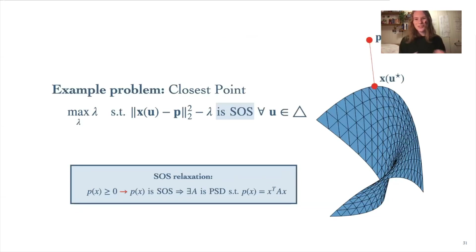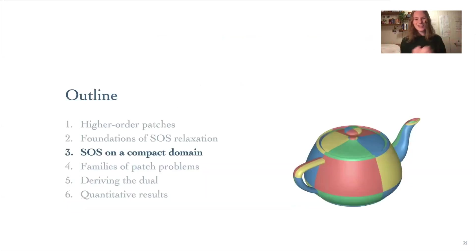So how would we apply this to a real problem? Well, we simply change the constraint that the polynomial is greater than or equal to zero into the constraint that it is SOS. Notice that this is relaxation because not every positive polynomial is necessarily an SOS polynomial. You might also notice that this particular problem, the closest point problem, and in fact all of our patch problems, is defined on a compact domain, whereas we talked about SOS relaxation on polynomial over all space in this section. So in order to actually solve this problem, we have to talk a little bit more about SOS relaxation, specifically applied to a compact domain, which we'll go over now in this section.